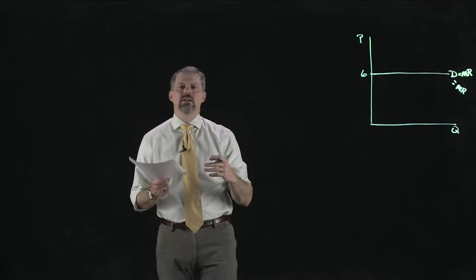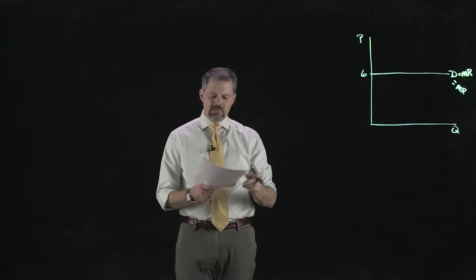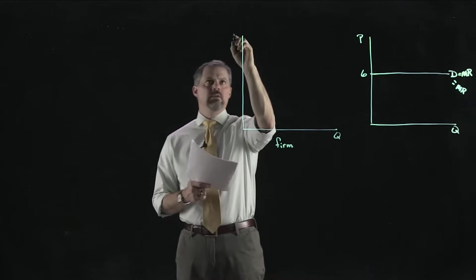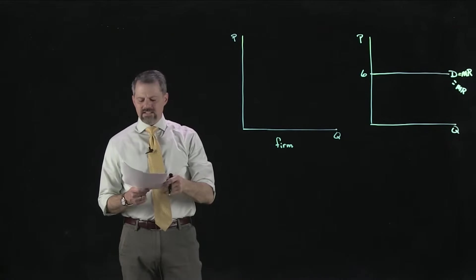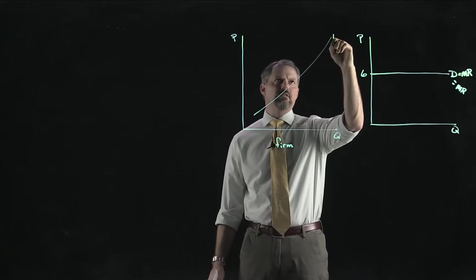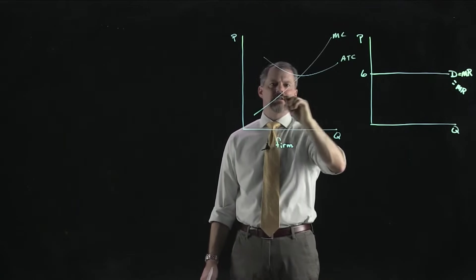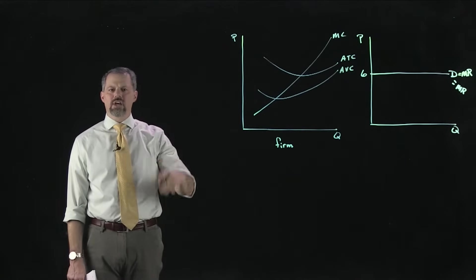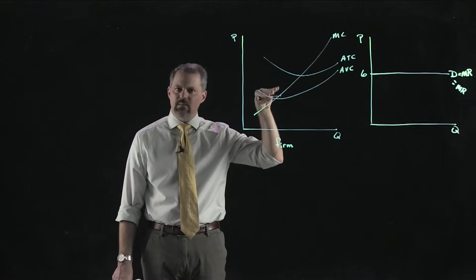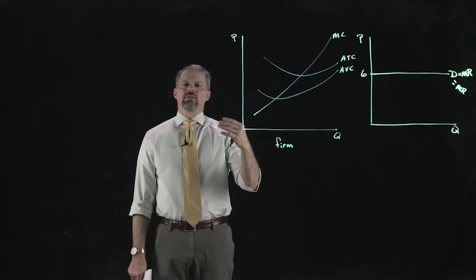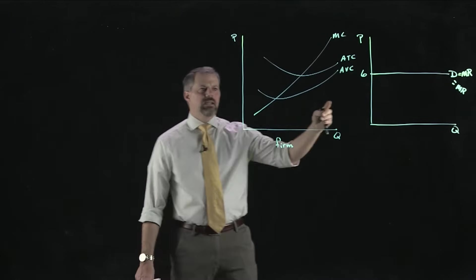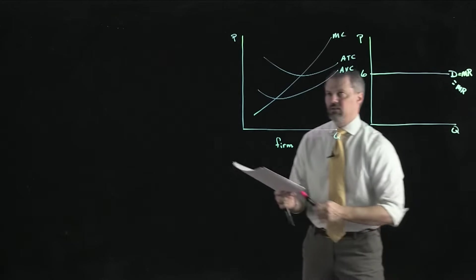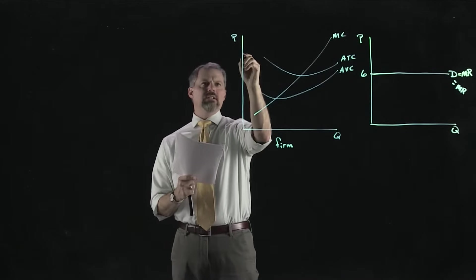Let's think about the firm's marginal cost curve and its supply decision. Drawing the cost curves for a competitive firm: we've got an upward-sloping marginal cost curve, an average total cost curve, and an average variable cost curve. The average curves are U-shaped and intersect the marginal cost curve at their bottoms. Now we want to put in the revenue of the firm — suppose the market price is at some level. We draw the marginal revenue curve horizontally at the market price.